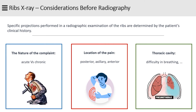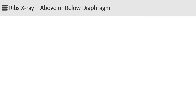Also, before beginning the study, you should determine whether the patient is able to stand or not. The location of the patient's complaint determines which region of the ribs is to be imaged — is it above or below the diaphragm?